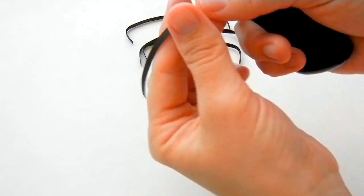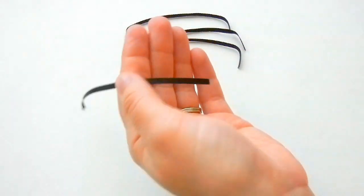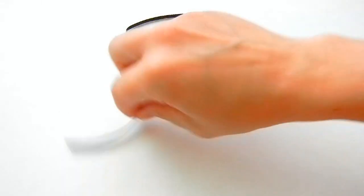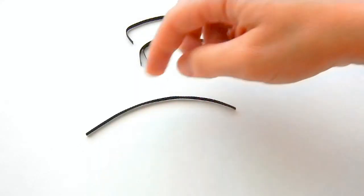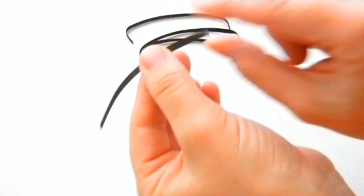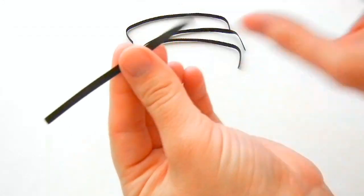You might notice that the ribbon goes a certain way, it goes this way. And so I generally would make sure it's laying that way when you make the feet.